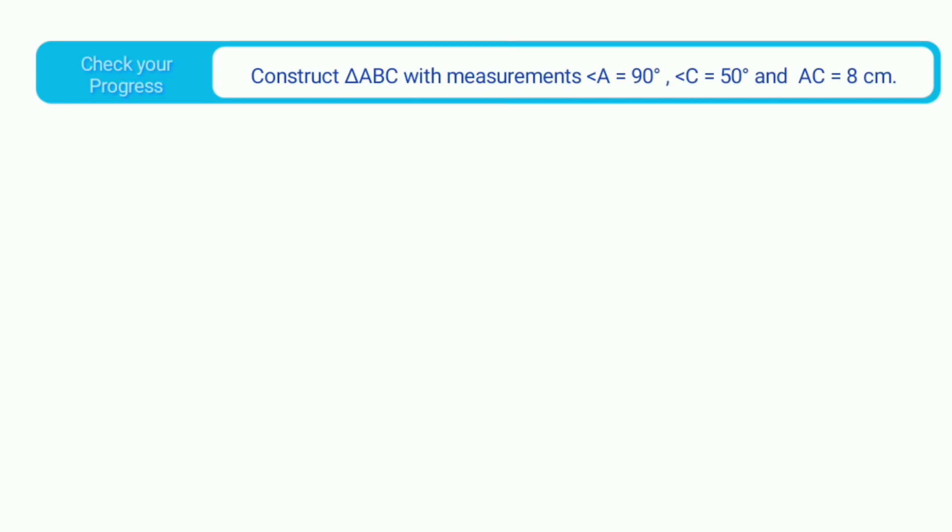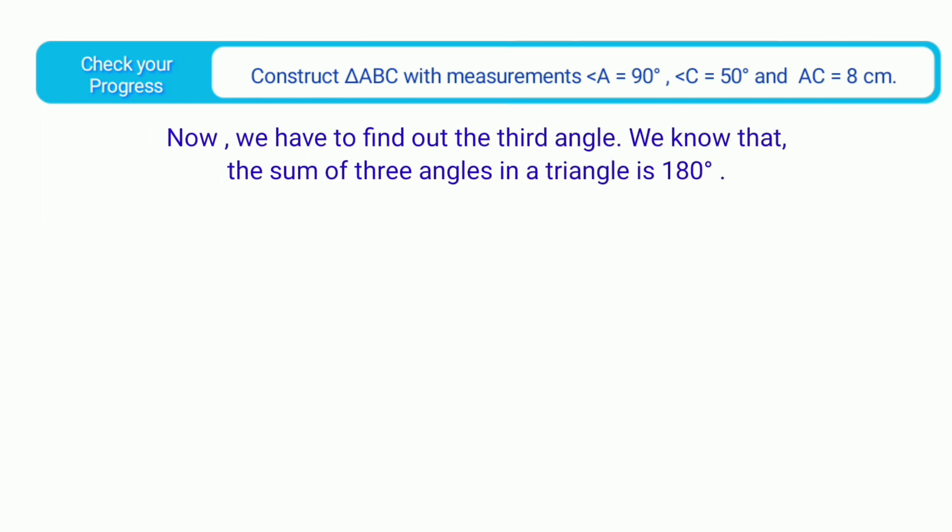Check your progress: Construct triangle ABC with measurements angle A equals to 90 degrees, angle C equal to 50 degrees, and AC equal to 8 cm. Now we have to find out the third angle. We know that the sum of three angles in a triangle is 180 degrees.